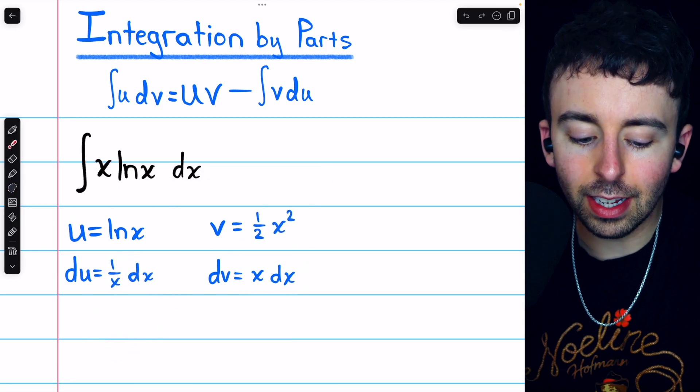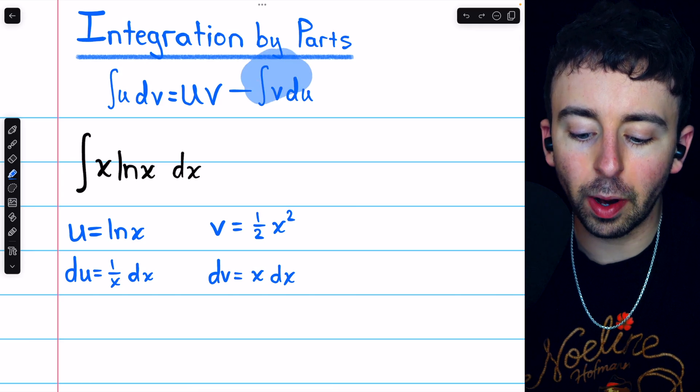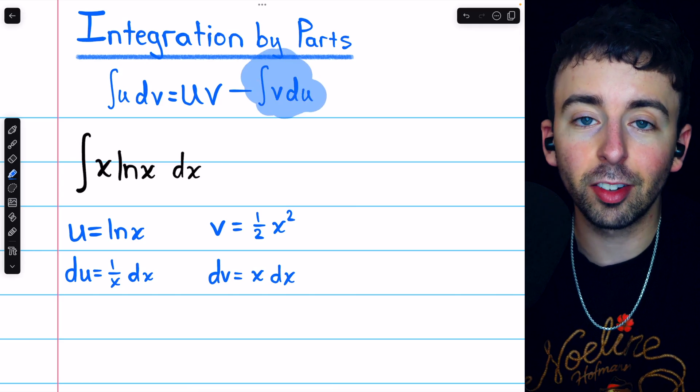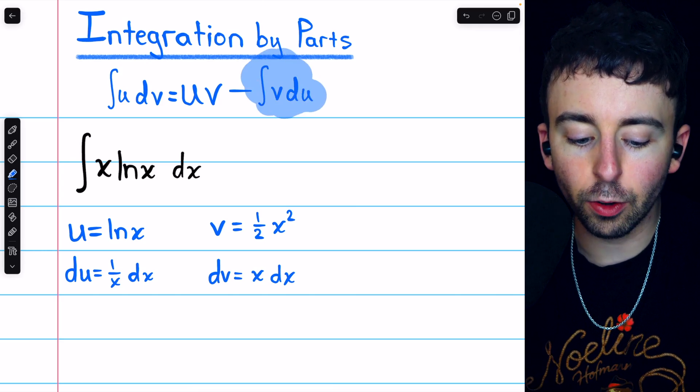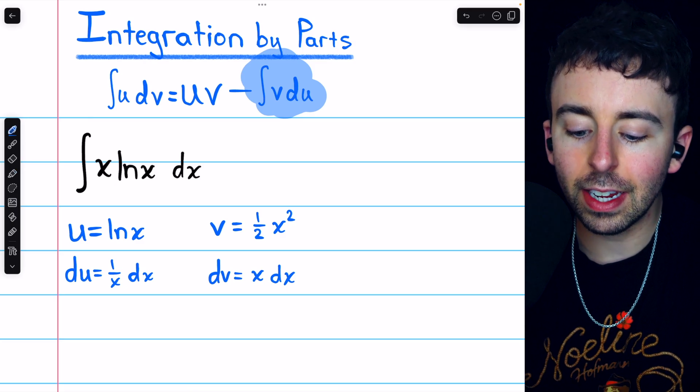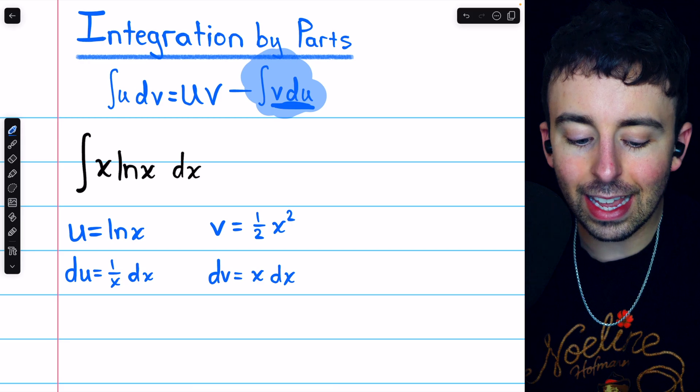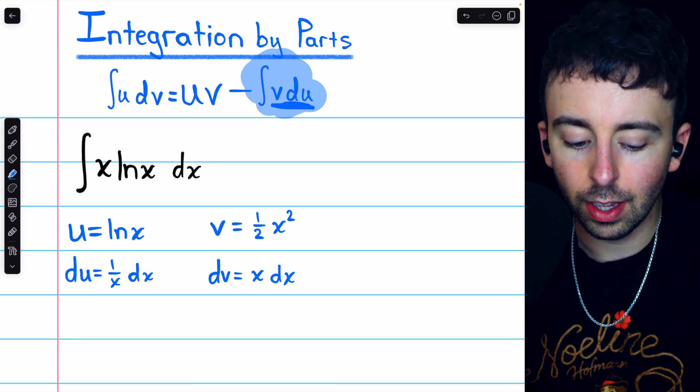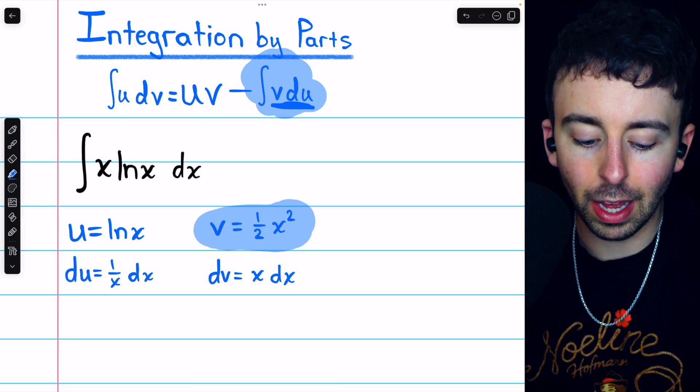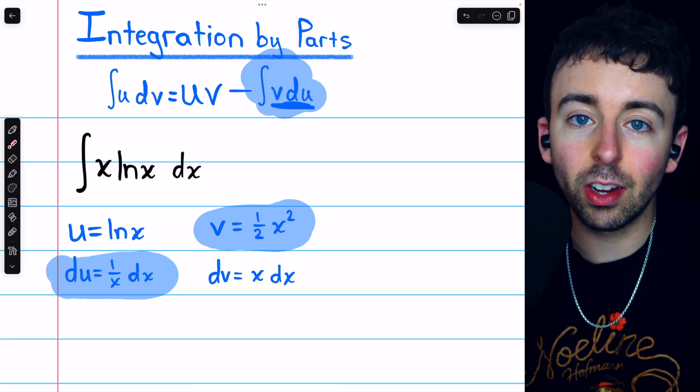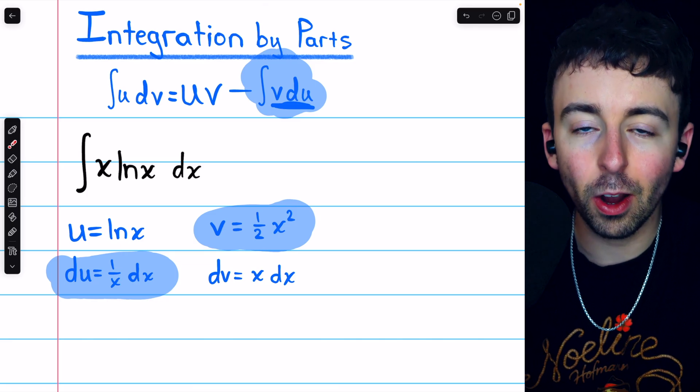Once we have all these pieces, it's a good time to check that the integration by parts formula is actually going to help us. When we apply integration by parts, we're going to have to integrate v times du. Let's check, what is v times du? It would be this multiplied by this, and that is going to be easy to integrate. So, let's proceed.